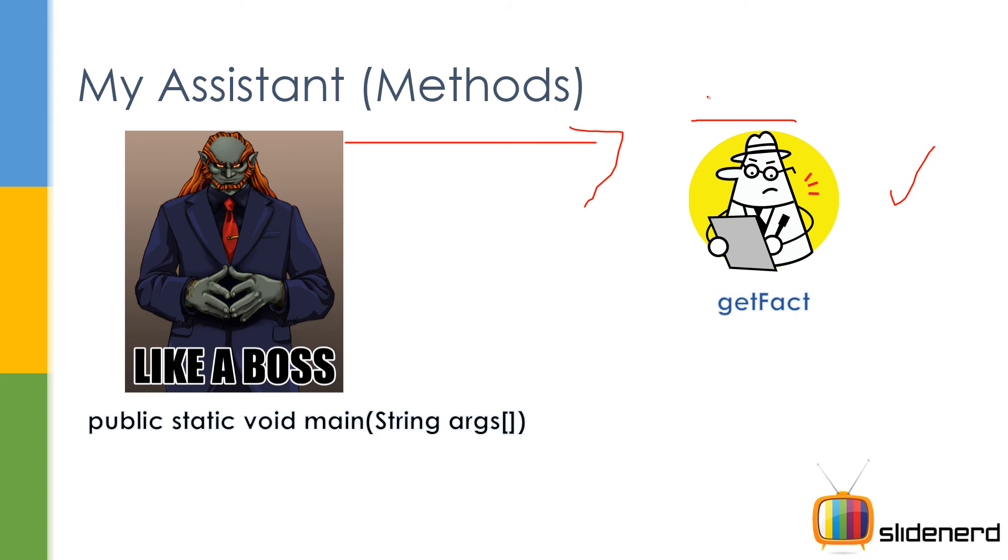6 factorial, calculate the factorial for me. The assistant says okay, fine, give me the number. So the boss gives him the number by saying int n inside the brackets.